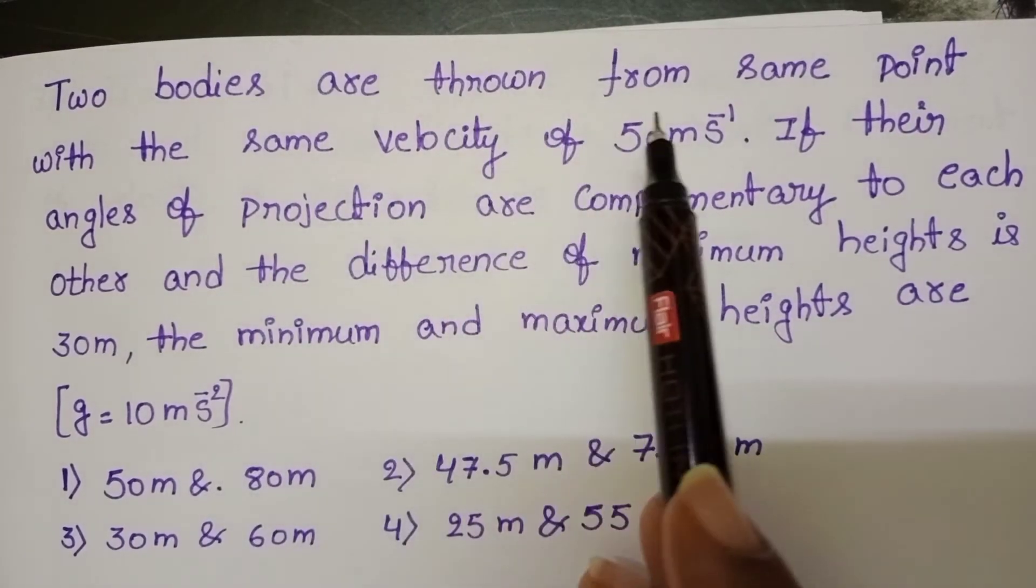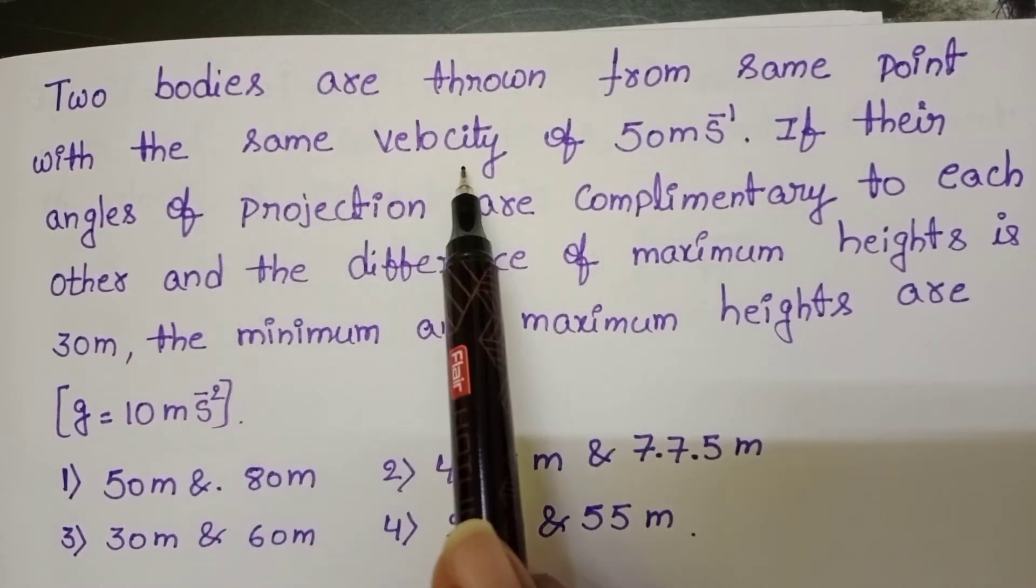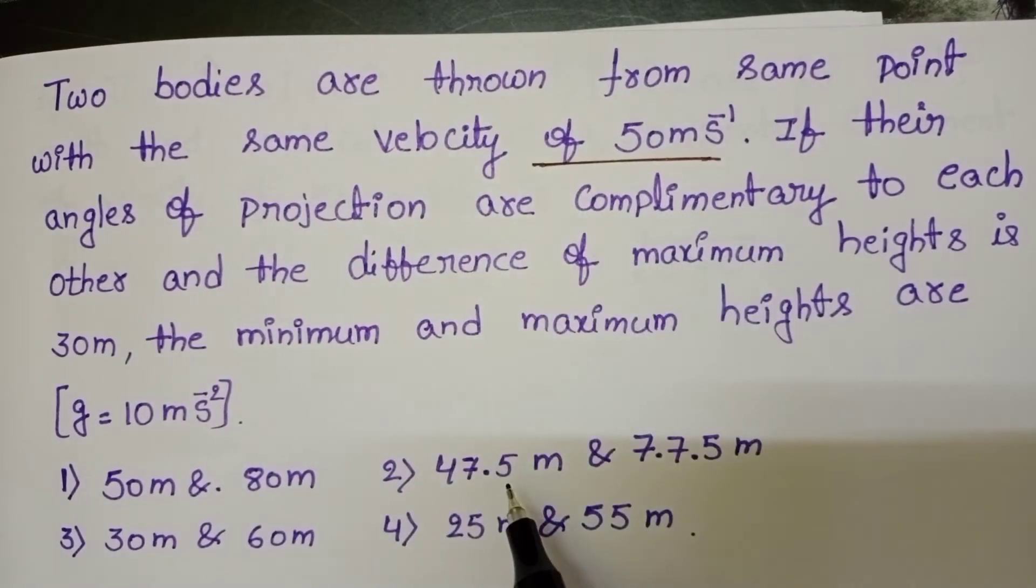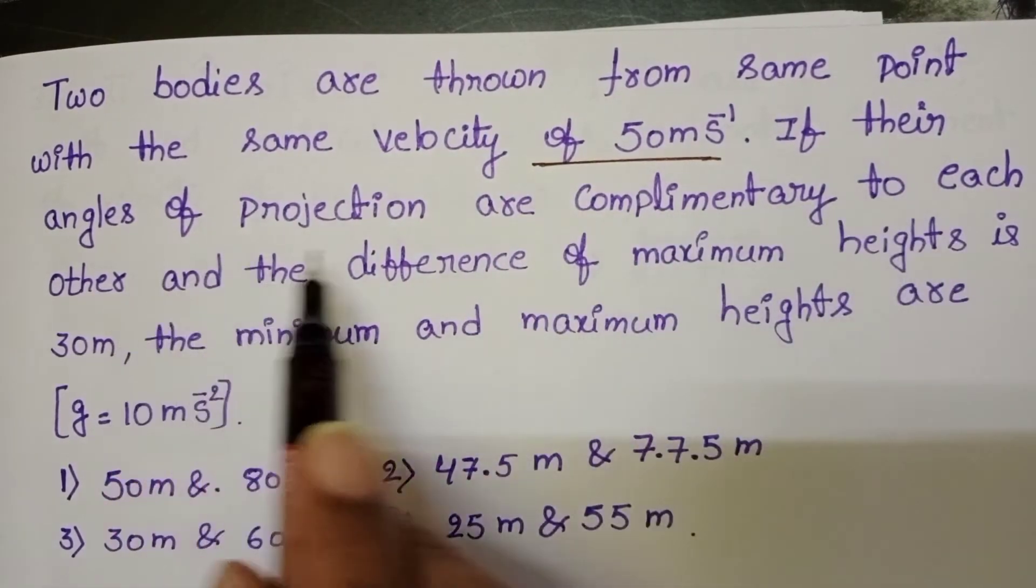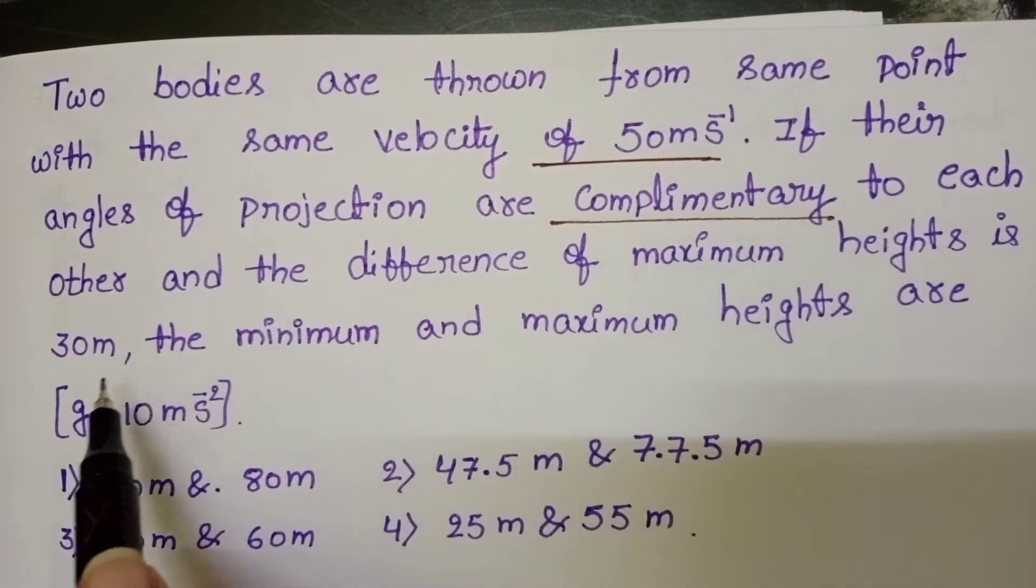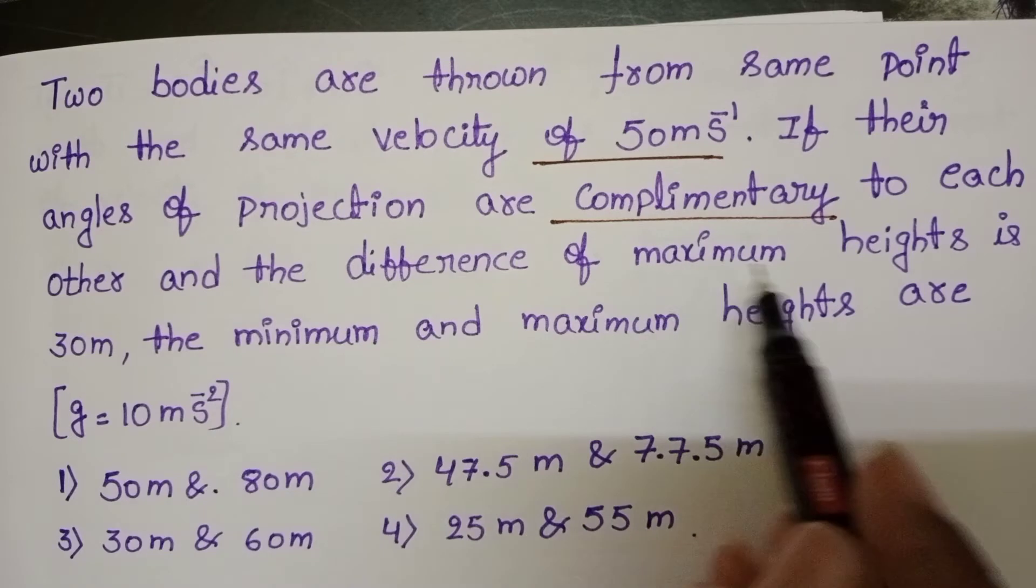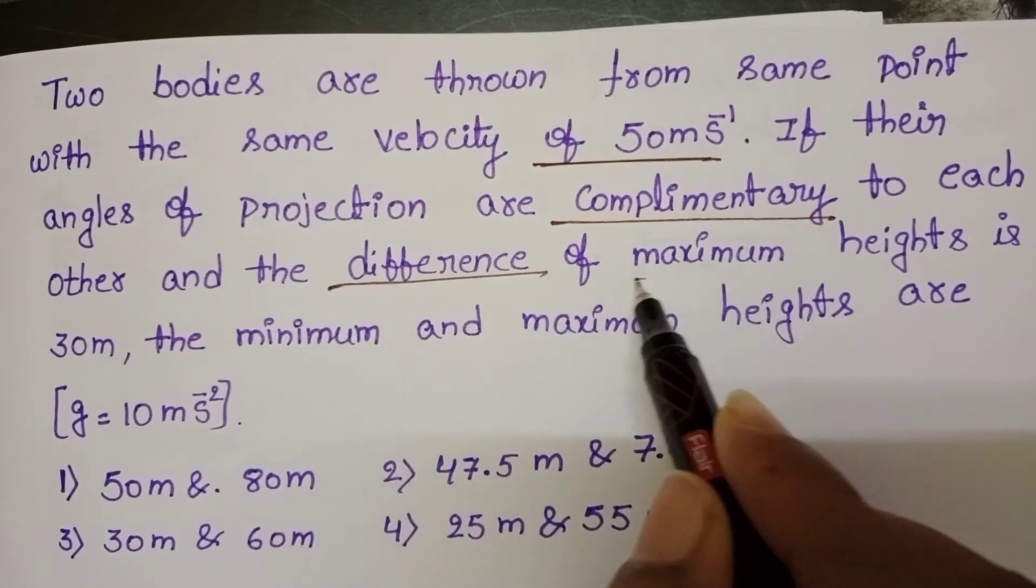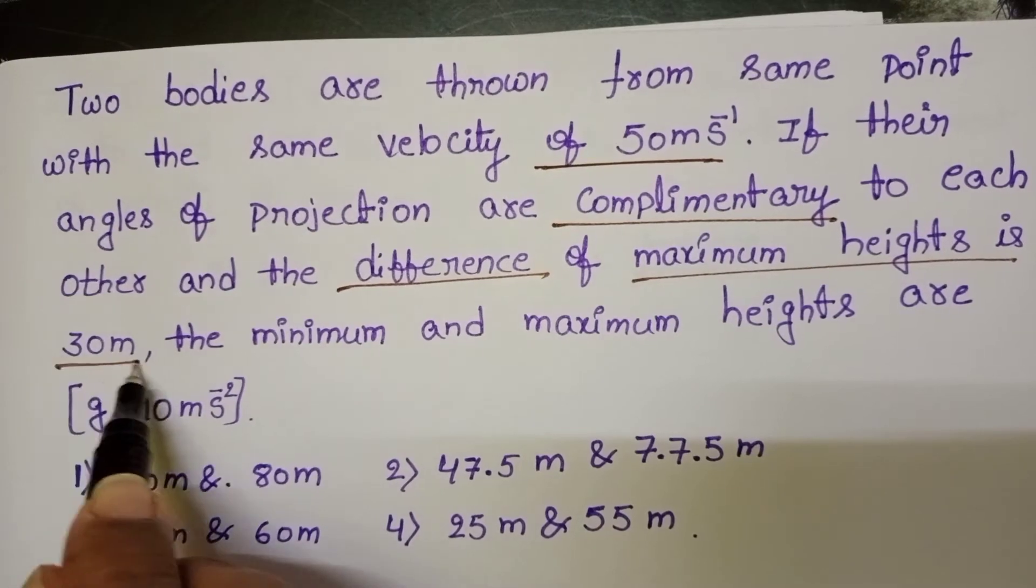Two bodies are thrown from same point with the same velocity of 50 meters per second. If their angles of projection are complementary to each other and the difference of maximum heights is 30 meters, find the minimum and maximum heights.